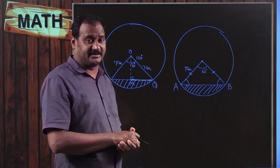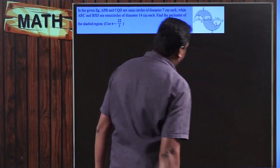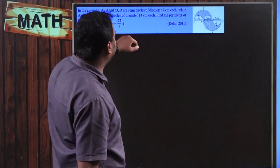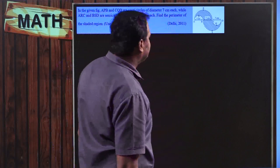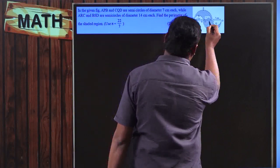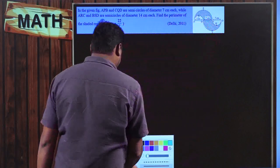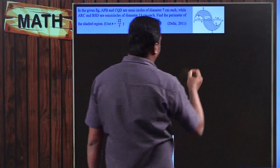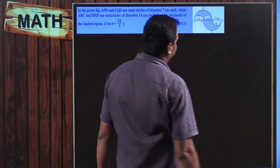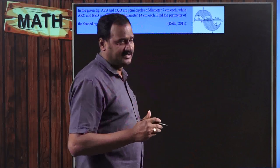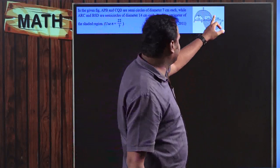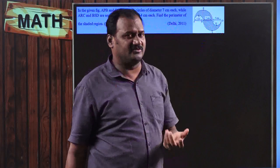Let us try problems from previous board examinations. The first problem: in the given figure, APB and ACQD are semicircles of diameter 7 cm each. There are two semicircles — the upper one and the lower one. The entire line segment is divided into three parts of 7 cm each, so the bigger semicircle has diameter = 7 + 7 = 14 cm.